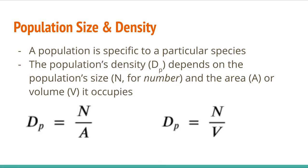Population size we already talked about earlier. We can measure population density based on an area or a volume. There are two ways of measuring it: population size over the area it occupies — often in kilometers squared, miles squared, or hectares — or population size over the volume it occupies. We use the volume measurement for aquatic species and the area measurement for terrestrial species.